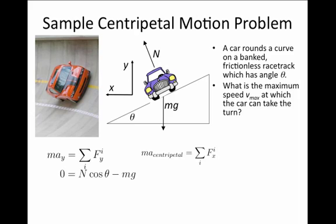In the y direction, there are two forces. There is a component of the normal force, and it's N times cosine theta, which points in the y direction, and that's in the positive y direction, and mg, which points in the negative y direction. Since the car doesn't leave the track, the acceleration of the y direction is zero, and we can write zero is N cosine theta minus mg.